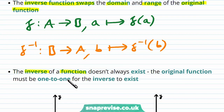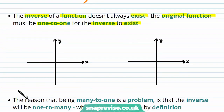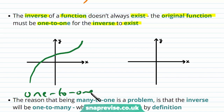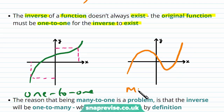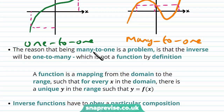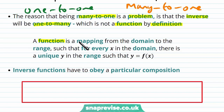The inverse of a function doesn't always exist. The original function must be one-to-one for the inverse to exist. A one-to-one function means that for every y you pick there is exactly one x value that corresponds to it. A many-to-one function, on the other hand, has certain y values for which there are at least two x values. The inverse of a many-to-one function would be one-to-many, which is not a function by definition — for every x in the domain there must be a unique y in the range.